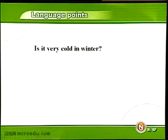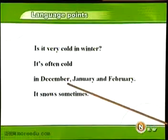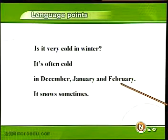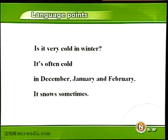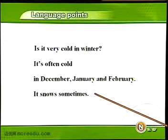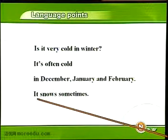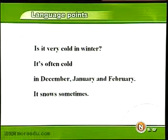那么我们再来看看冬天的情况怎么样。Is it very cold in winter? In winter，冬天。冬天都包括December十二月、January一月和February二月。It's often cold in December, January, and February. 十二月、一月和二月常常很冷。It snows sometimes. 有时候会下雪。动词snow，由于前面的主语是it，所以要加s。如果冬天不下雪，那么就是it doesn't snow in winter。要询问冬天下雪吗？Does it snow in winter?